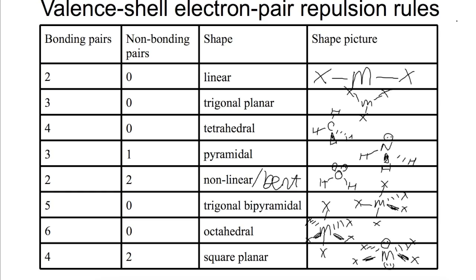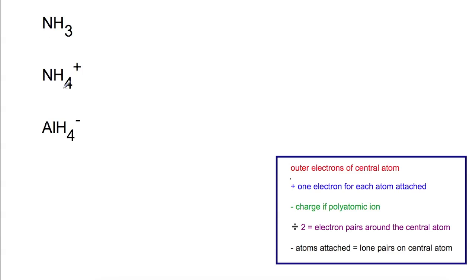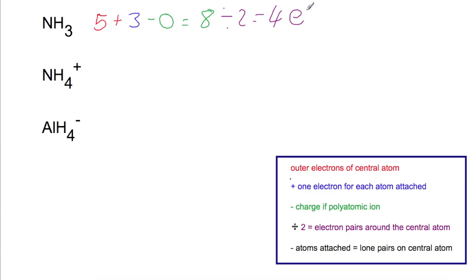Let's look at a few examples. For NH3, our central atom is nitrogen with five electrons. We add three (one for each attached atom) and no charge, giving a total of eight. Dividing by two gives four electron pairs. Taking away the three attached atoms leaves one lone pair. Arranging these to get as far apart as possible, taking into account the lone pair, means the shape for ammonia is pyramidal.